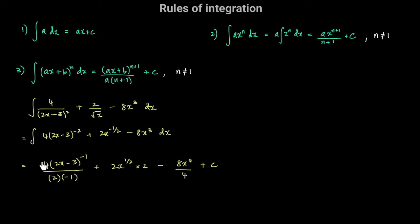Combining the results: 4 divided by negative 2 gives negative 2, times 2x minus 3 to the power of negative 1, which is negative 2 divided by 2x minus 3; plus 2x to the power of 1 half times 2, giving 4 times the square root of x; minus 8x to the power of 4 divided by 4, giving 2x to the power of 4; plus c.